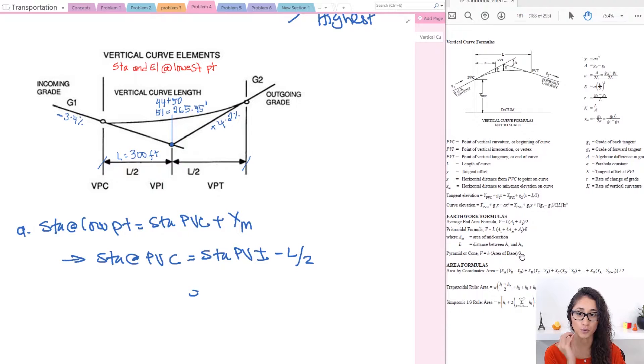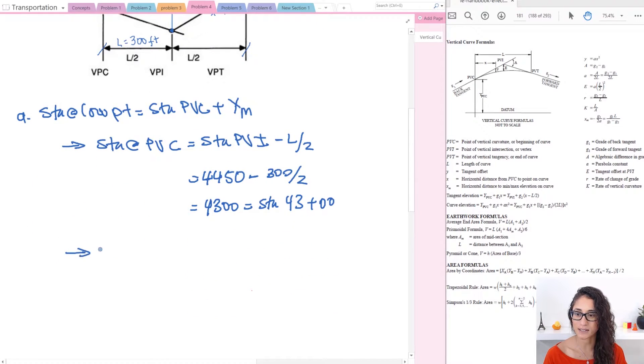Make sure you remember them and the best way to do that is by doing a lot of problems and you will start remembering them. So the station at PVI is given to us as 4,450 minus the length which is 300 feet divided by 2. This will give you an answer of 4,300 or you can write it in terms of station which is 43 plus zero zero.